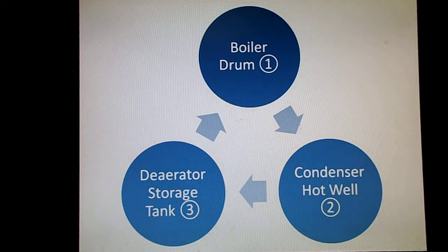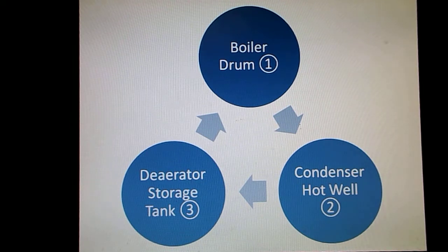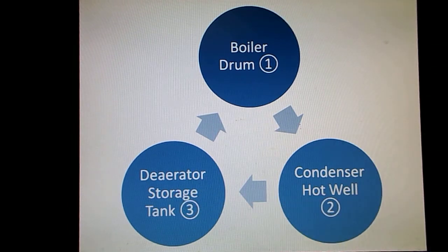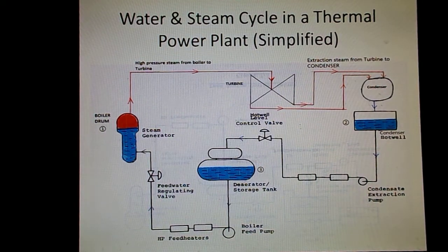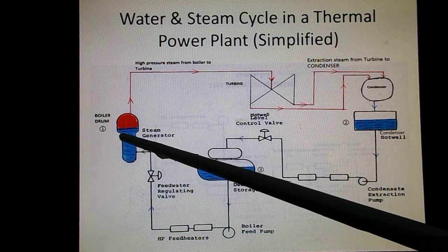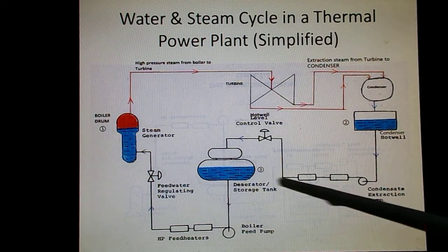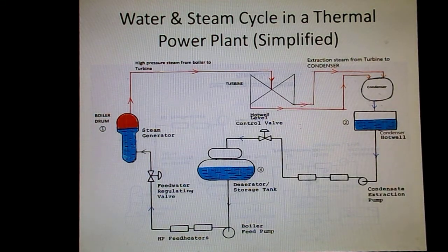This is a closed cycle, so the total quantity of water is fixed and constant. If we maintain the water level in two of the tanks, the third tank will maintain its level by itself, because the total water quantity is constant.